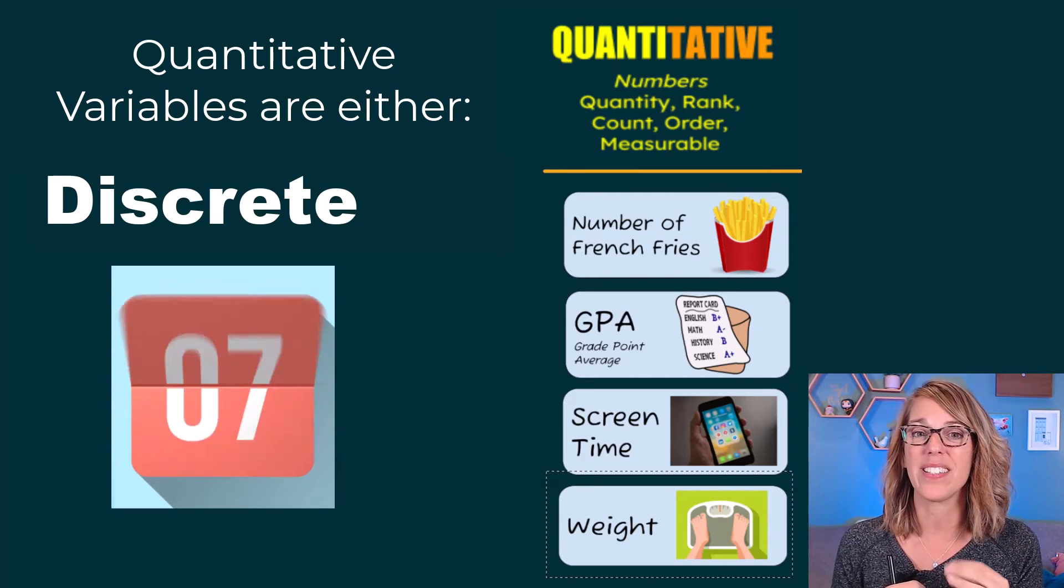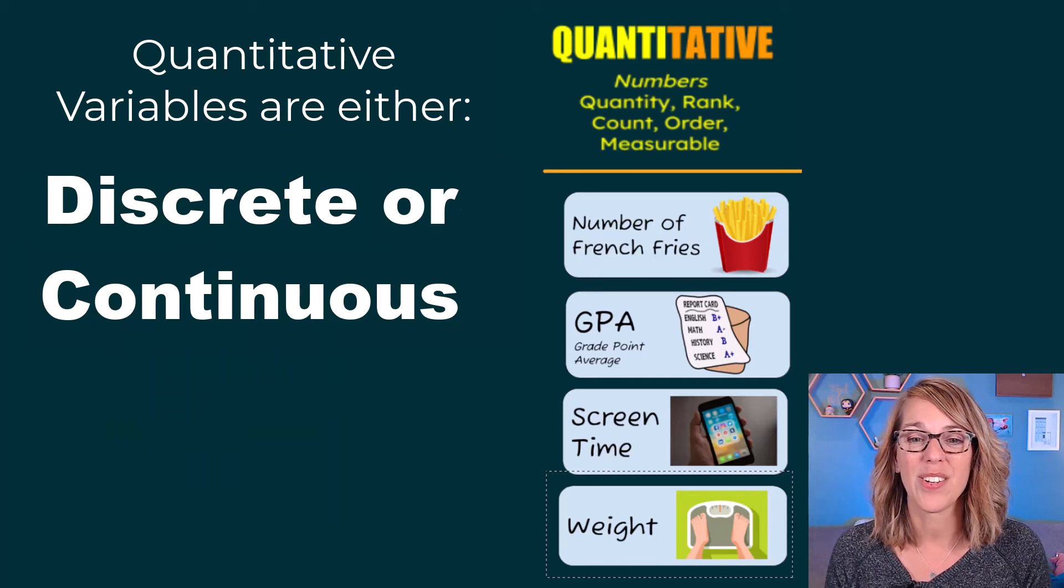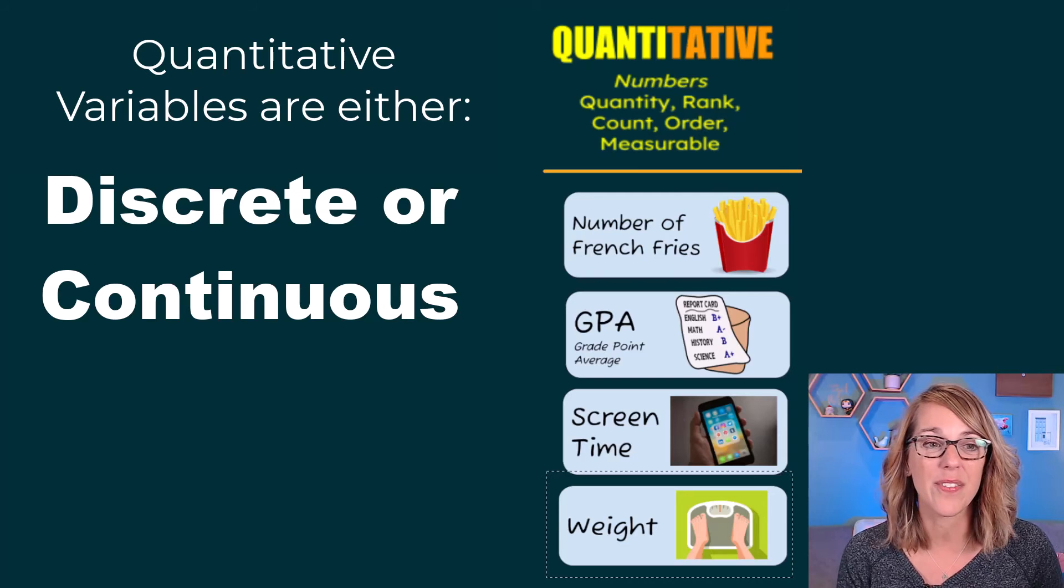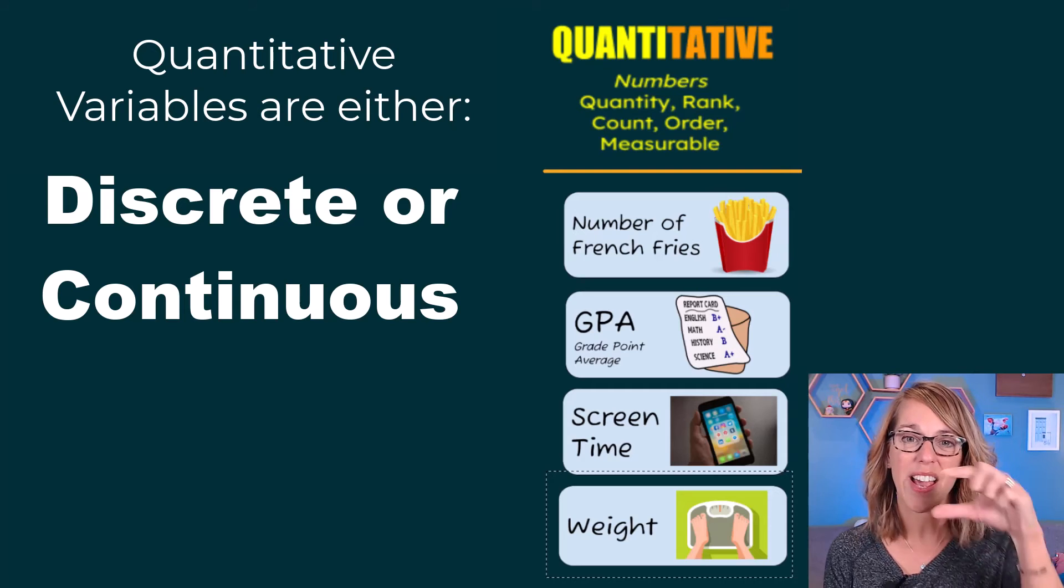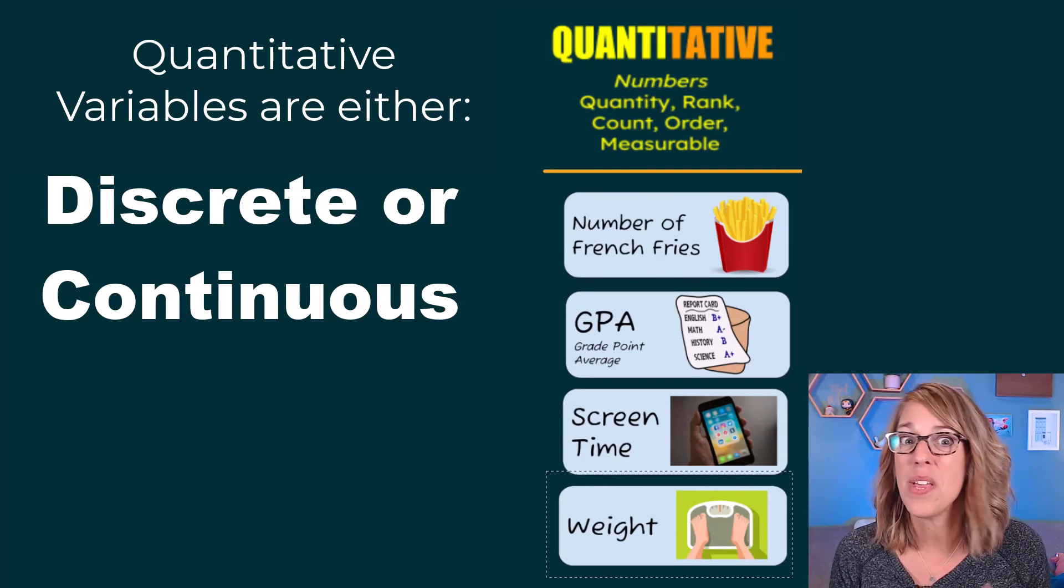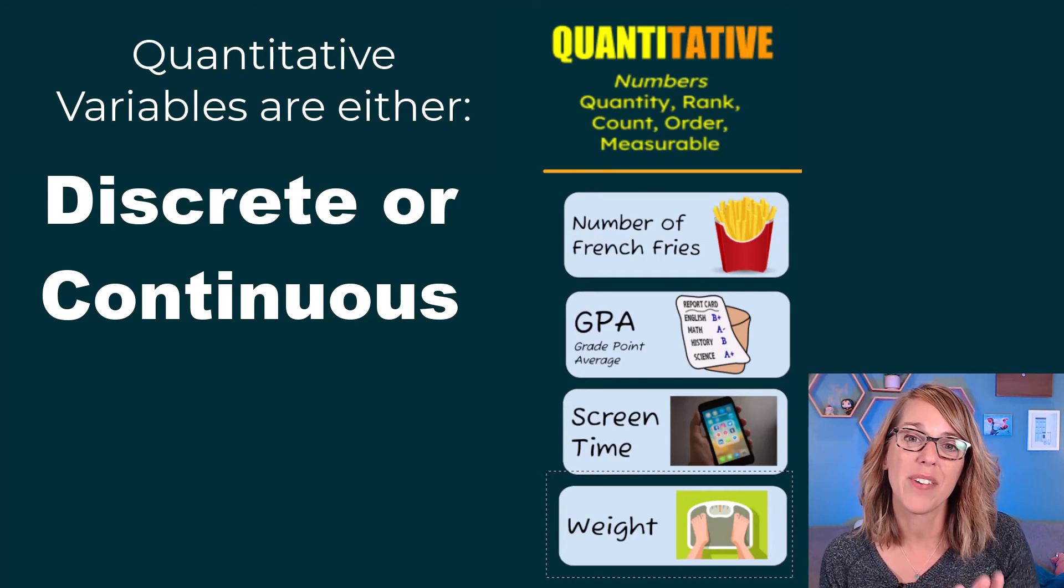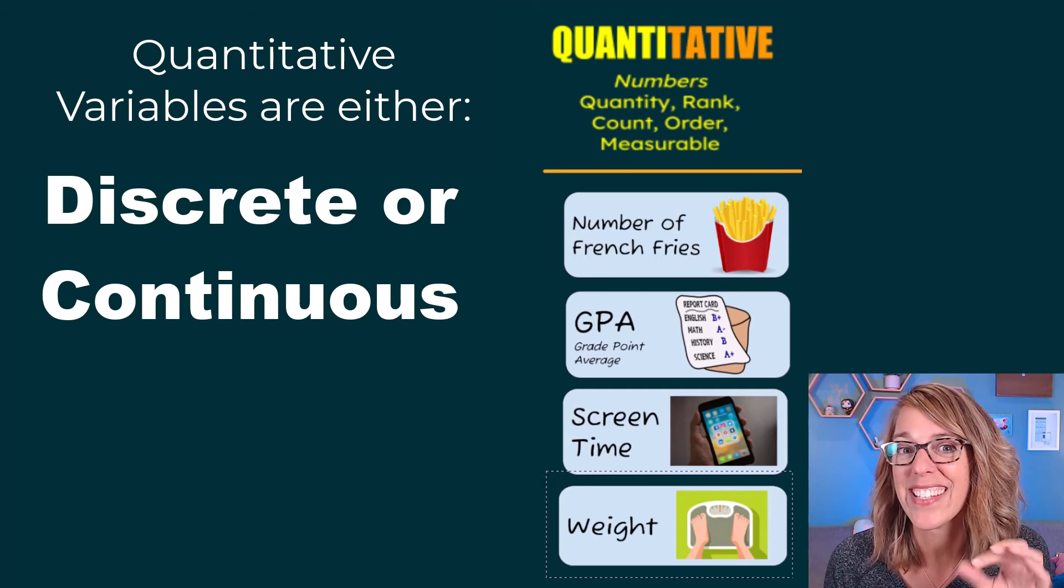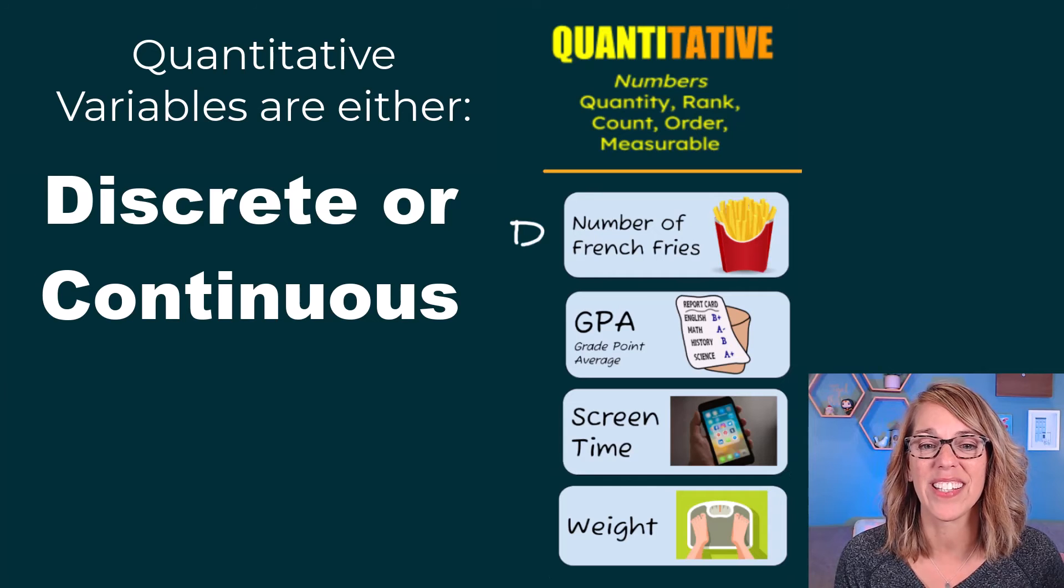Discrete variables tend to be ones that are counted, some kind of an amount. So let's further classify these. I'm going to just use D for discrete and C for continuous. So the number of French fries, I am taking out the French fries and I am counting them. Maybe I get crazy and call one a half of a French fry, but I'm never going to go through all of the possible numbers on the number line to count a number of French fries. This one is definitely discrete.